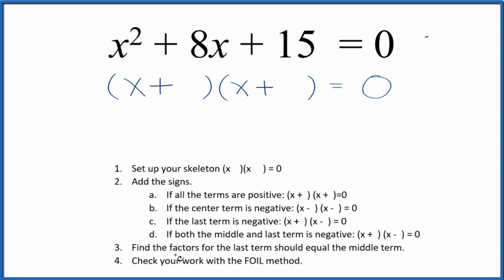Once we've done that, we can find the factors for the last term, that's the 15, and they should add up to the middle term. So let's write the factors for 15. And I can see that 3 times 5 equals 15, and 3 plus 5 equals 8. Put a 3 here and a 5 here. We're done.